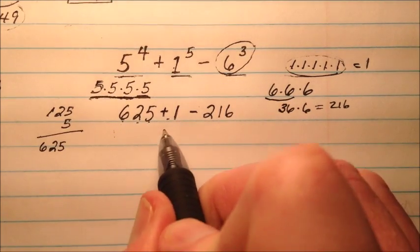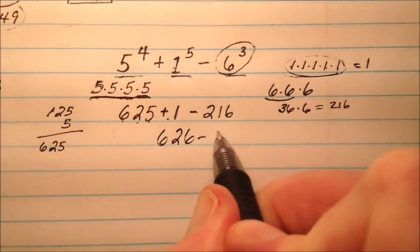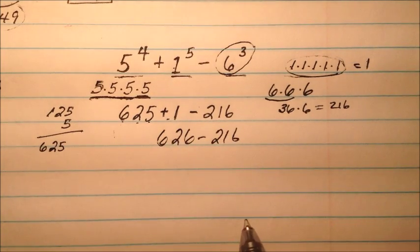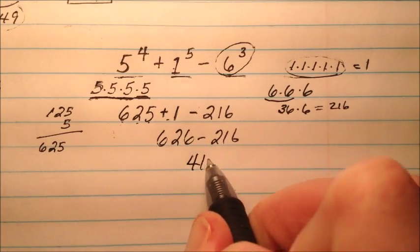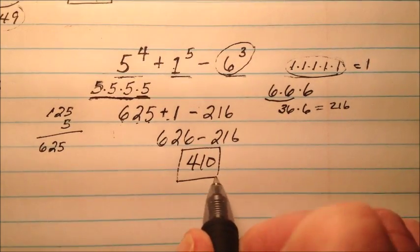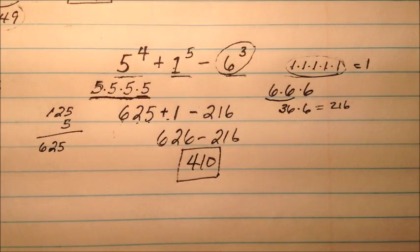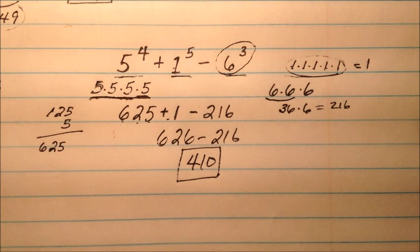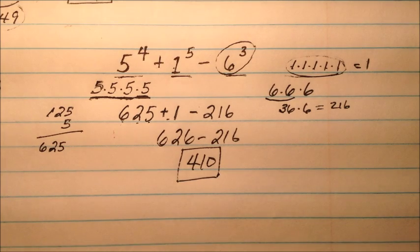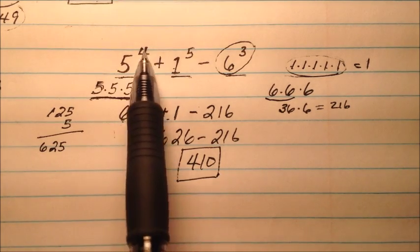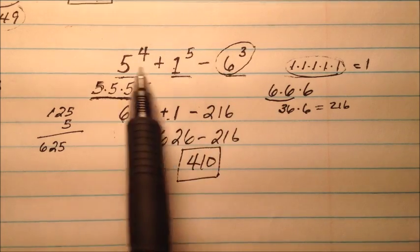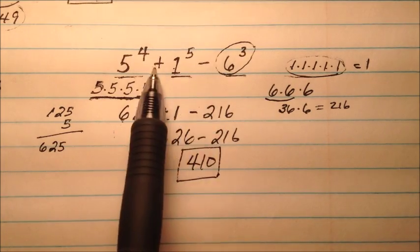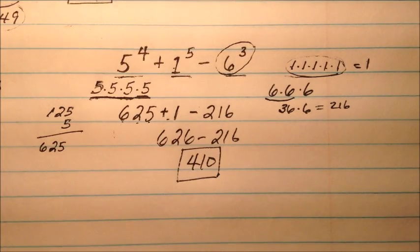So 625 plus 1 is 626, minus 216, and that should be 410 when we do that subtraction. In these examples, we have taken time to look at evaluating expressions that have exponents. When we do it, we're going to do one exponent at a time and then add or subtract them as indicated if there are more than one of them.